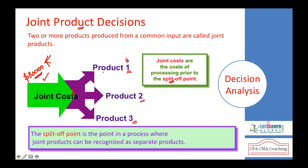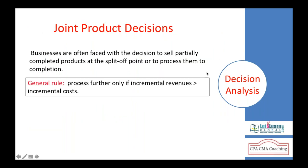The question is whether each product can be further processed and sold or must be sold at the split-off point itself. We need to collect information about the incremental revenues and incremental costs. For example: Product A and Product B are received from the joint operation. Product A can be sold at $20 at the split-off point, but the marketing team says it can be further processed and sold at $35.